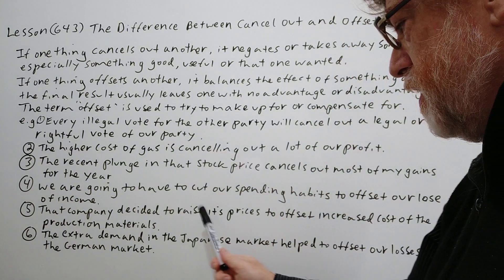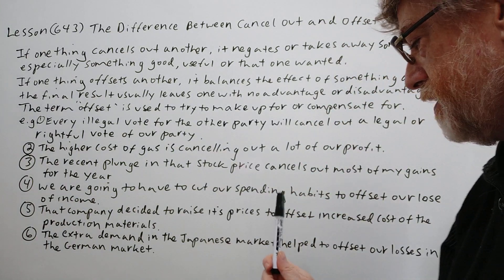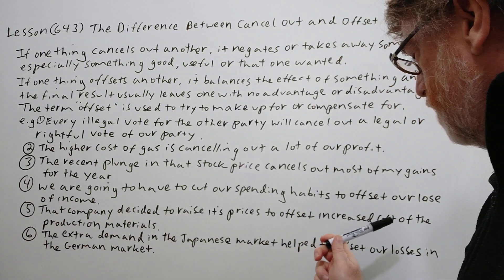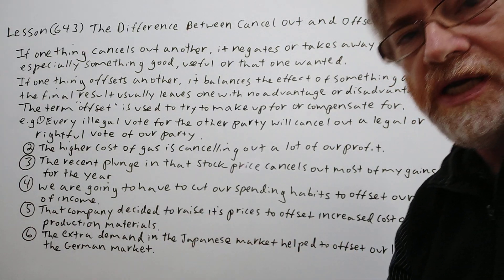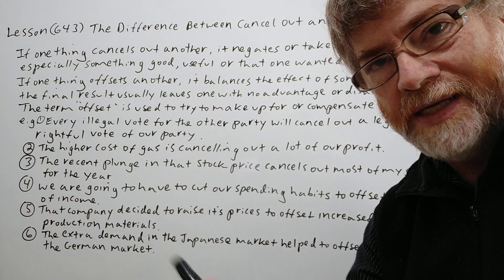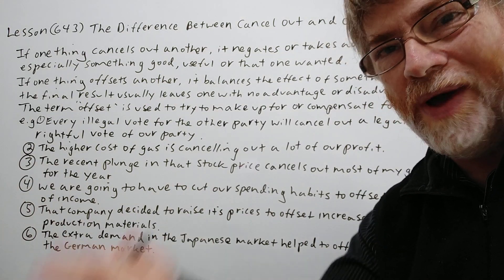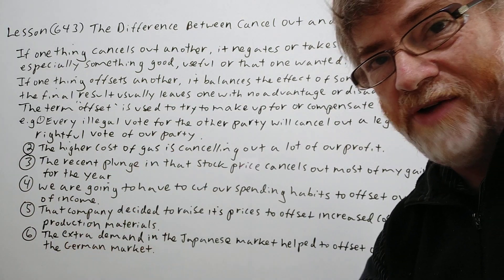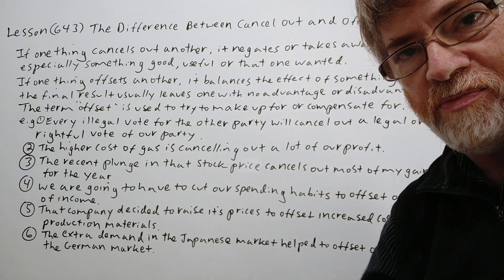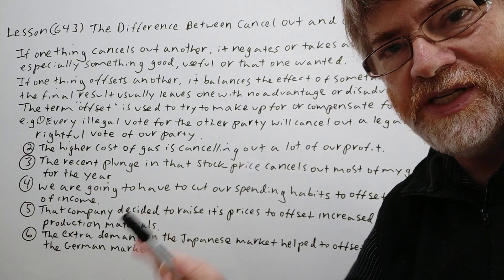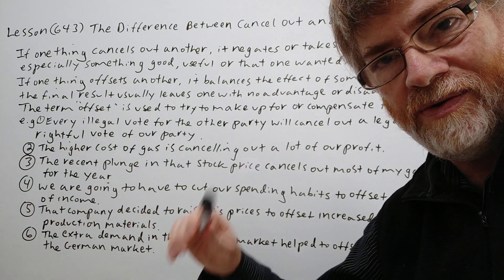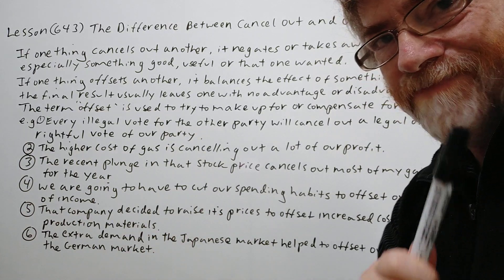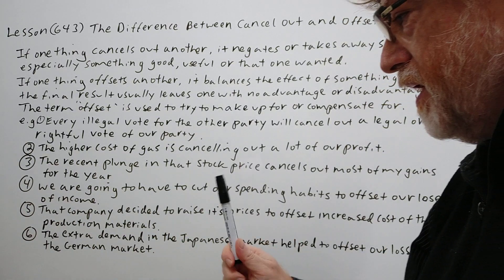Number five: that company decided to raise its prices to offset increased costs of the production material. The materials they were buying to make the product went up, and therefore if they don't do anything their profit is going to go down. So they have to raise prices to offset those higher costs.